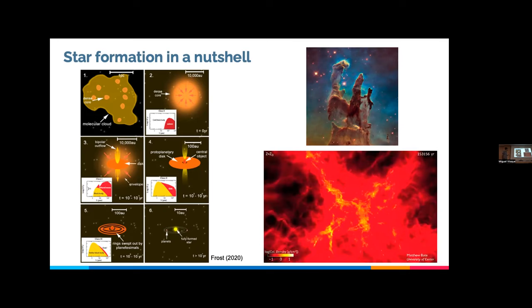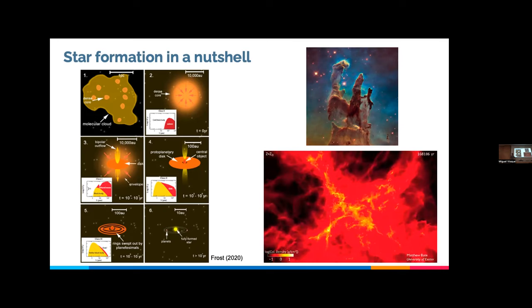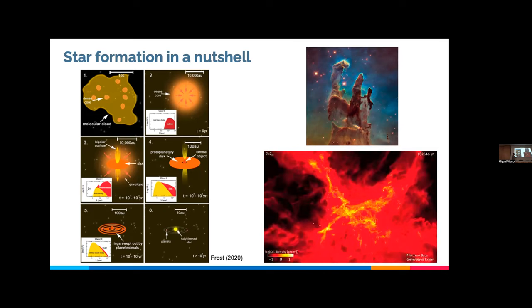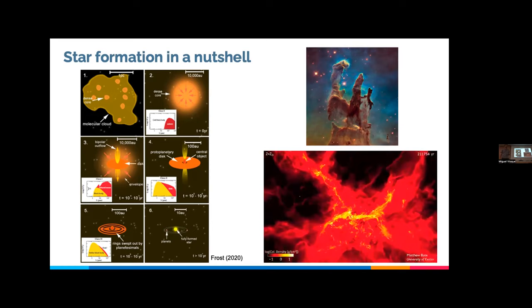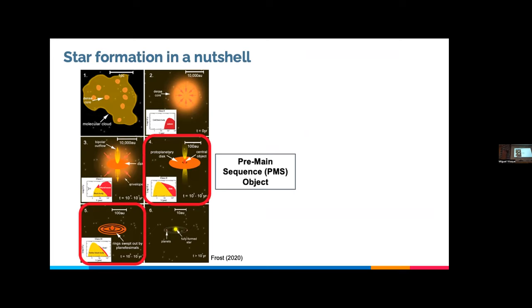Then, a hundred thousand years to a million years after collapse, we get to what we call the pre-main sequence phase, in which at a much smaller length scale we get a well-defined protoplanetary disk or accretion disk moving material inwards and accreting it onto the forming star. These objects are not as embedded, have less energetic outflows, and are visible in the optical with significant infrared excess from the disk. Eventually the disk dissipates — material is accreted, ejected, or locked into planets — and one to ten million years after collapse we end up with a fully formed star with a planetary system. In this talk I will focus only on the pre-main sequence phase.